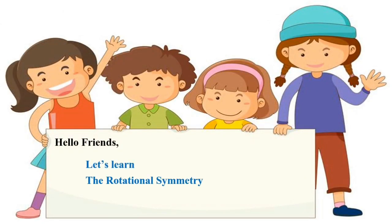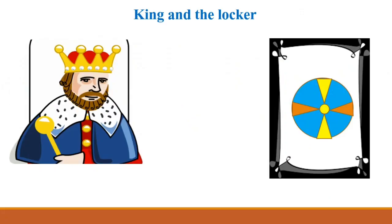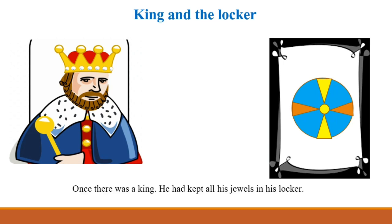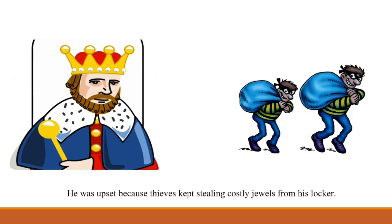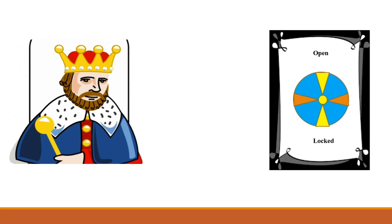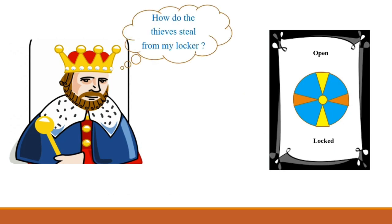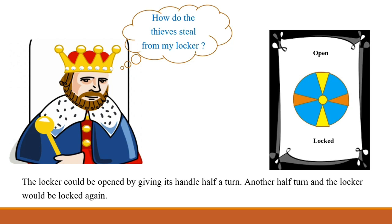My dear friends, let us learn about rotational symmetry. I would like to tell you a story about the king and the locker. Here is the king and this is his locker. Once there was a king who had kept all his jewels in his locker. He was upset because thieves kept stealing costly jewels from his locker. The king was thinking: how do the thieves steal from my locker? The locker could be opened by giving its handle half a turn, and another half turn would lock it again.